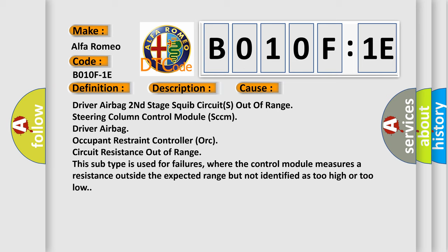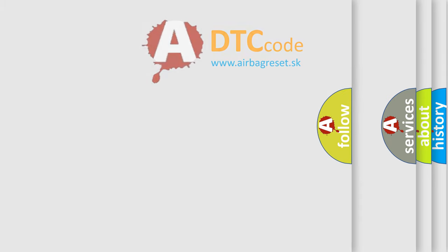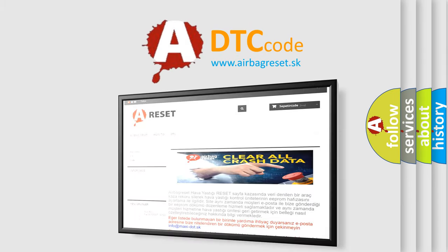Circuit resistance out of range. This subtype is used for failures where the control module measures a resistance outside the expected range but not identified as too high or too low. The airbag reset website aims to provide information in 52 languages.